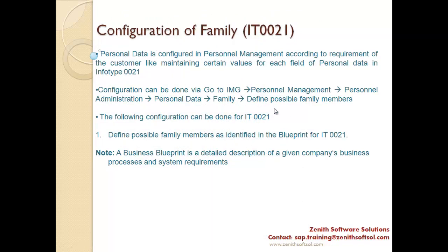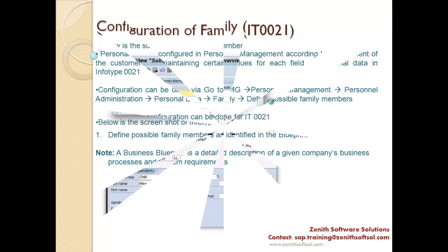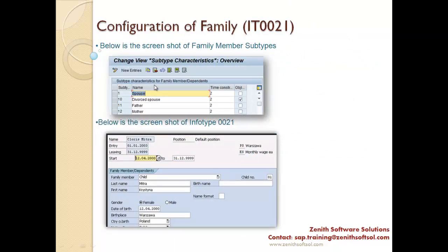There is also info type 21, which captures family details — family members like wife, son, daughter, mother-in-law. This info type also uses subtypes. I want to emphasize: subtypes are not for all info types — only for specific ones like info type 6 and info type 21. If someone asks whether every info type has a subtype, the answer is no. For info type 21, subtypes include spouse, divorced spouse, father, mother, and many others.